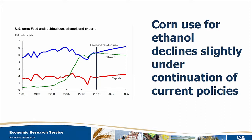Renewable energy policies remain a significant driver of markets. Within the U.S. in the projection period, ethanol continues to account for about a third of total U.S. corn use. This drops slightly due to the ability to blend ethanol into gasoline, but nonetheless it remains important. Globally, biofuels production is expected to increase in the next 10 years, although at a slower rate than in the past.